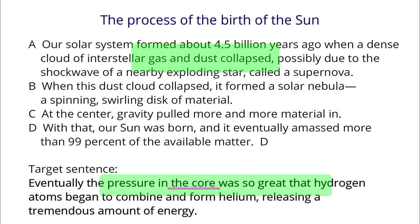A talks about the collapse of dense interstellar gas and dust. B talks about what happened after the collapse of the interstellar gas — the creation of a solar nebula. C talks about the center of the solar nebula. Center is a synonym of core, so after C is a good candidate for the target sentence.